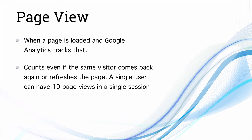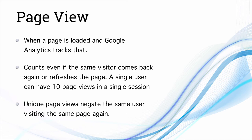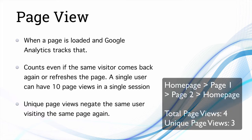The next one is page view. A page view is basically when a page is loaded and Google Analytics tracks that load. It counts even if the same visitor returns or refreshes the page — a single user can have 10 page views in a single session. There is also unique page views, which negates repeat visits to the same page. For example, if a visitor views 3 pages but returns to the home page, total page views are 4 but unique page views are 3.